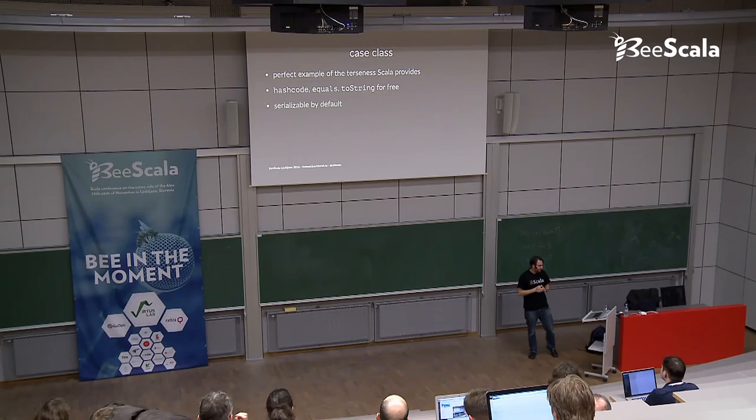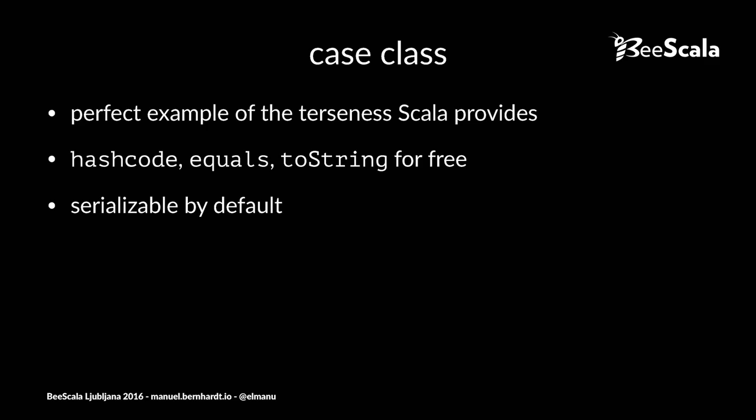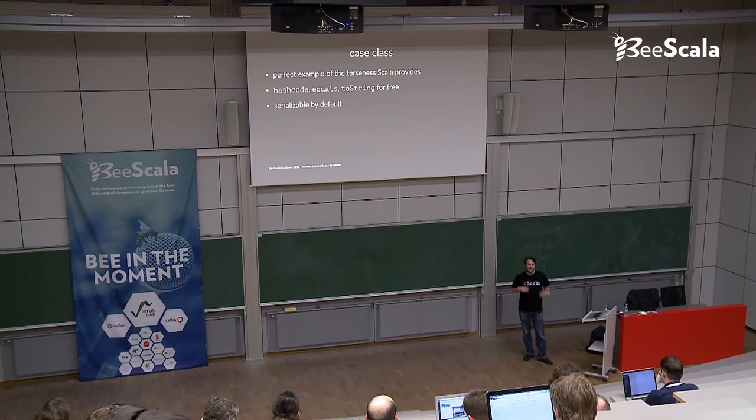And what's designed into the language is to be a terse language where you use simple things to express a lot. As said, it has hash code equals for free. It's serializable by default, which makes it nice when you do things like encoding JSON, XML, passing data around. It's called a value object pattern.